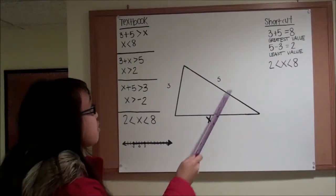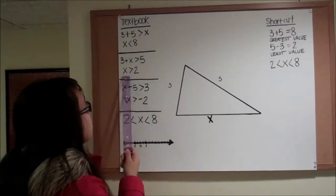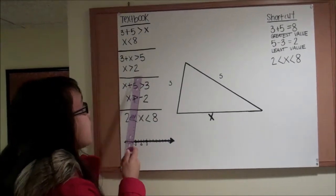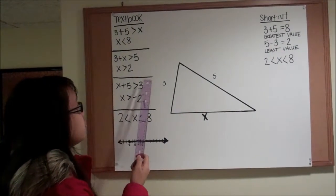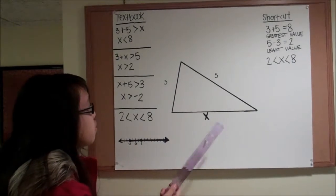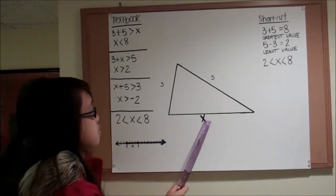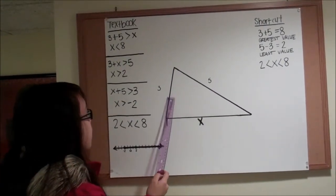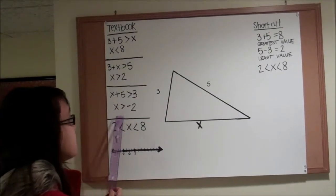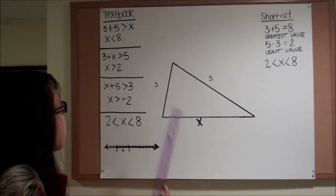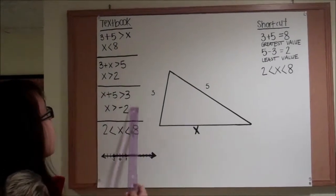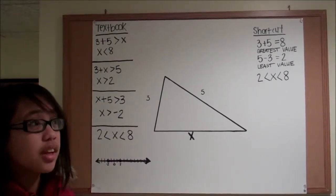3 plus X is greater than 5, which results in X is greater than 2. Then you would do X plus 5 is greater than 3, which results in X is greater than negative 2. So you're left with three inequalities that are possible for X.